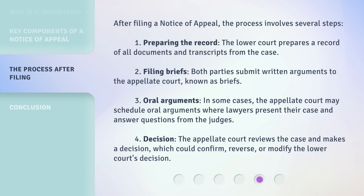After filing a Notice of Appeal, the process involves several steps. 1. Preparing the record: the lower court prepares a record of all documents and transcripts from the case. 2. Filing briefs: both parties submit written arguments to the appellate court, known as briefs. 3. Oral arguments: in some cases, the appellate court may schedule oral arguments where lawyers present their case and answer questions from the judges. 4. Decision: the appellate court reviews the case and makes a decision, which could confirm, reverse, or modify the lower court's decision.